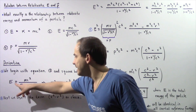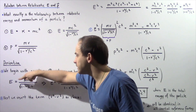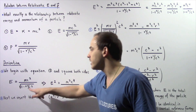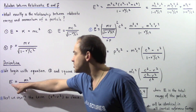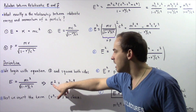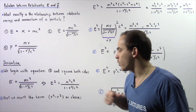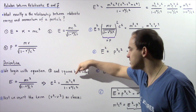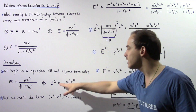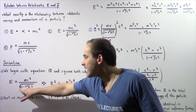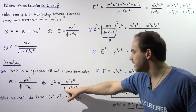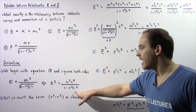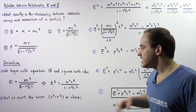Let's begin our derivation by taking equation two and squaring both sides. E equals mc squared divided by the square root of 1 minus v squared over c squared. Squaring the left side gives E squared. Squaring the right side gives m squared c to the fourth power divided by 1 minus v squared divided by c squared.